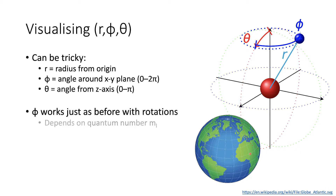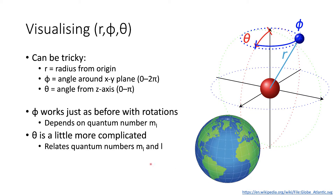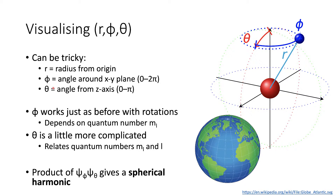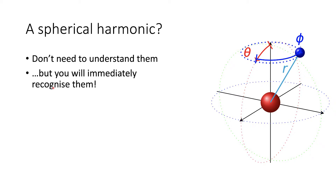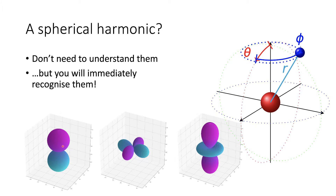Phi works just as before with rotations and depends on the quantum number ml. Theta is slightly more complicated, but it relates the quantum numbers ml and l together — the angular momentum quantum number with the angular number. When we multiply our wave functions for phi and theta together, we get something called a spherical harmonic. A spherical harmonic is something you have come across before — you don't need to fully understand them, but you will immediately recognize their shapes.